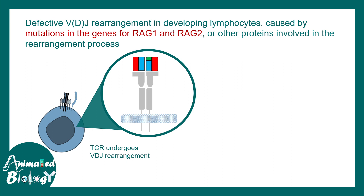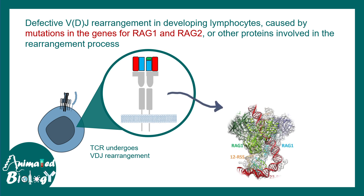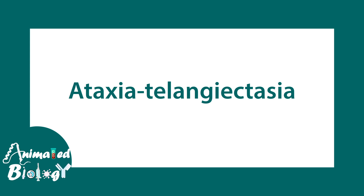There could also be defective VDJ recombination when there is a mutation in the genes for RAG1 and RAG2. Both gene products are recombinase enzymes required for VDJ recombination. VDJ recombination is important for antibody production and also for T-cell receptors. When these two genes are mutated, there could be functional compromisation of these aspects.